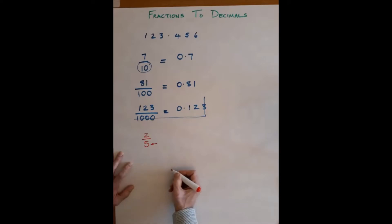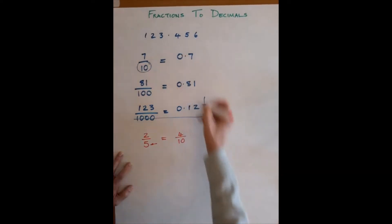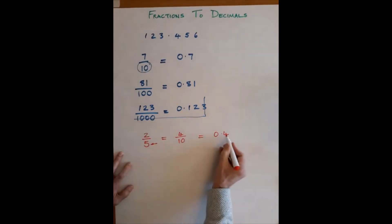But it doesn't take Einstein to work out that if we multiply that by 2, then we get 10. So if we multiply the top by 2 and the bottom by 2, we will have 4/10. So these two numbers are basically the same. And all I've done is multiply the 5 by 2 to get 10, 2 by 2 to get 4. And at this point we can use this system, so this is 0.4. Four goes in the tenths column.